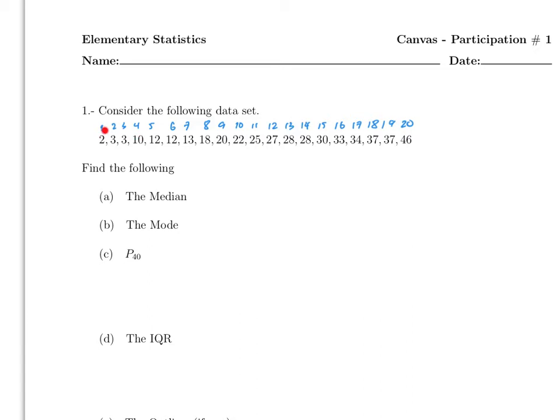The first thing you should do is make sure how many data points you have, so label them one, two, three. I count up to 20 — is that correct? Yes, 20 numbers. Remember the median is P50, so let's do this using percentiles. We need to find P50, and the first step is to do NK over 100, which in this case is 20 times 50 over 100.